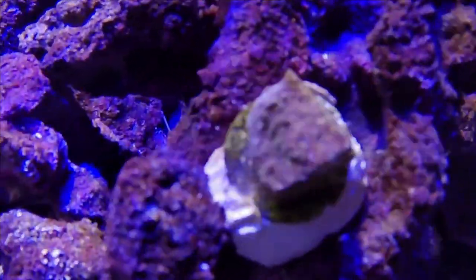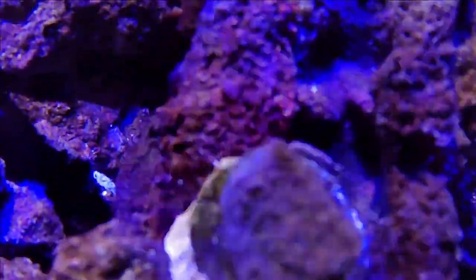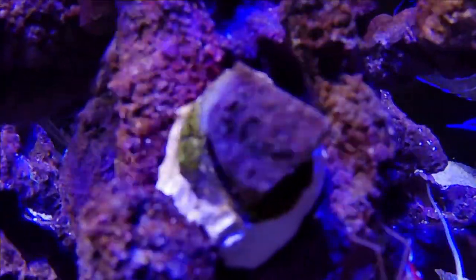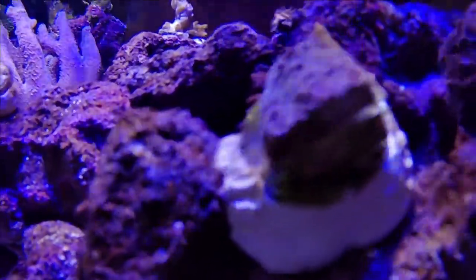And this one was the Rainbow Montipora. Again just absolutely no polyp showing whatsoever. What I'll do is I'll quickly overlay a photo of what they look like when I first got them in the frag rack sitting in the bottom of the tank slowly acclimating up for the light.